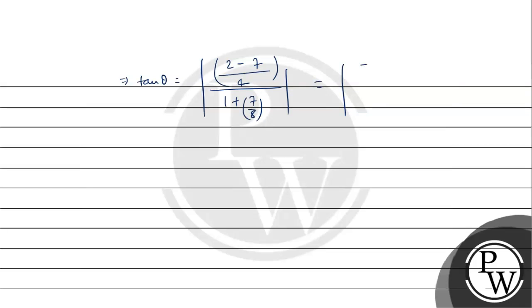We will simplify it. Here, -5 upon 4, whole upon 8 plus 7, 15 upon 8. So, tan θ will be -5 into 8 upon 4 into 15. 5 into 3 is 15, and 4 into 2 is 8.